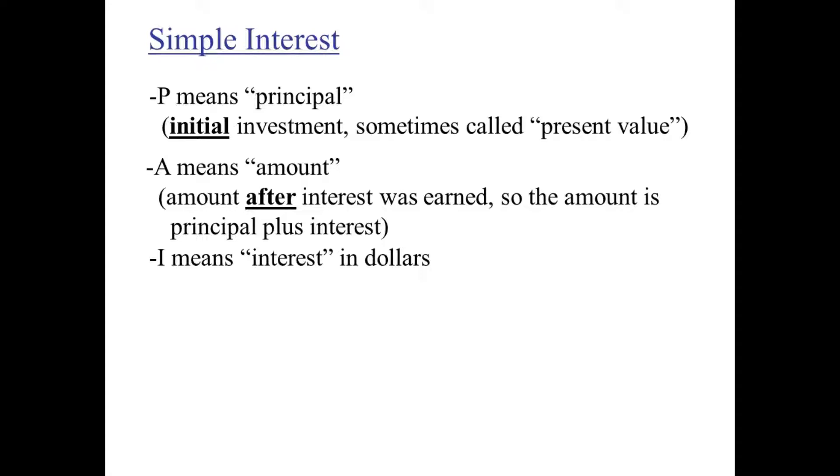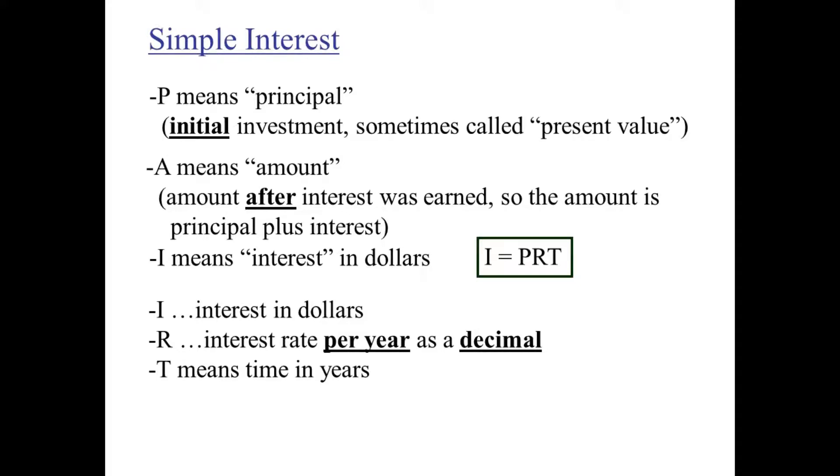I means interest in dollars. That would be the rental on the car. And there's a formula to figure out how many dollars of interest you would owe. Interest in dollars is PRT, the principal times the interest rate times the time in years. So if it was five months, then it would be five-twelfths because five months is five-twelfths of a year. If it was 20 days, then T would be twenty three-hundred-and-sixty-fifths because a day is a three-hundred-and-sixty-fifth of a year.